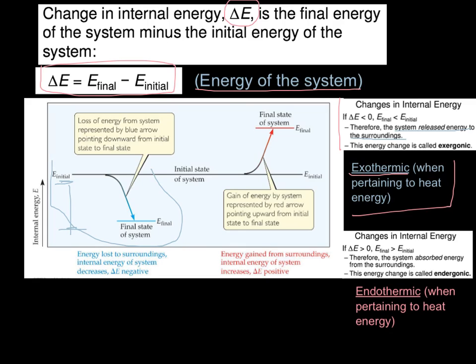But if we're talking about heat energy, which we commonly will be doing, we call it an exothermic change. Conversely, if we look here, if our initial energy is lower than our final energy and our delta E is greater than zero, meaning a positive value, that means the system absorbed energy from the surroundings. Our reactants and products took in energy. This energy change is called endergonic, and if we're talking about strictly thermal energy or heat energy, it's called an endothermic change.